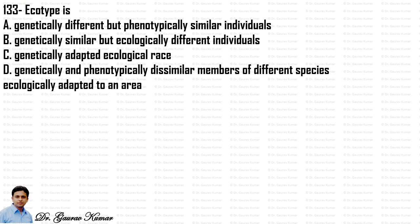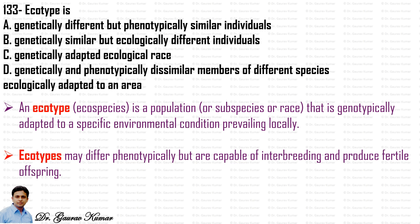Next question: what is an ecotype? An ecotype or eco-species is a population or subspecies genotypically adapted to specific local environmental conditions. An ecotype may differ phenotypically but is capable of interbreeding and producing fertile offspring. Option C — ecotype is a genetically adapted ecological race — is correct.